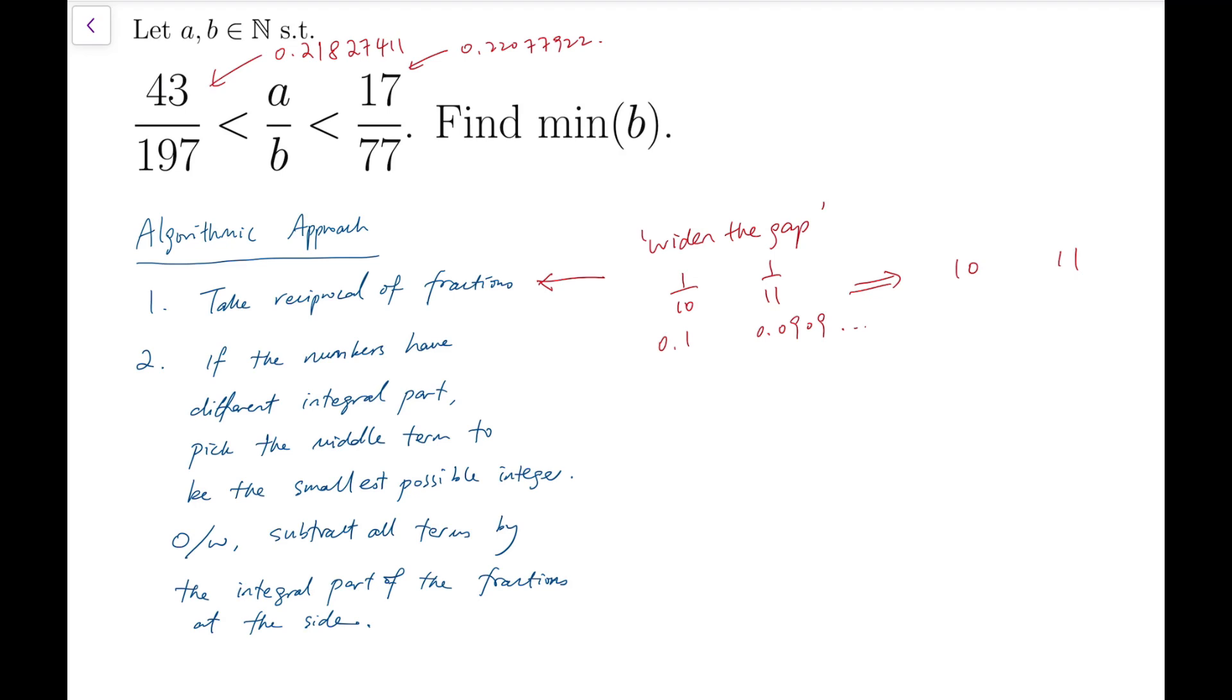Here's the first step. The second one is that if the numbers have different integral parts, pick the middle fraction to be the smallest possible integer. Say if I have 3.5 and then 4.1 to be the two fractions at two sides, then we pick the middle number to be 4, exactly 4. This is to minimize the entries because we are not looking for the smallest possible fraction, but we want the denominator, the b, and consequently a as well, the entries to be the smallest.